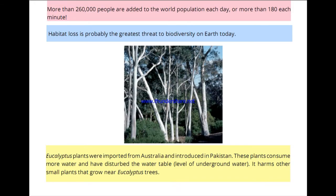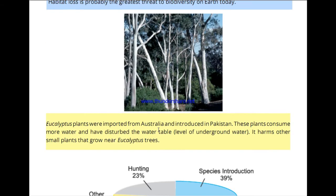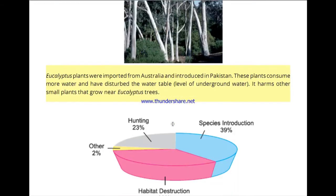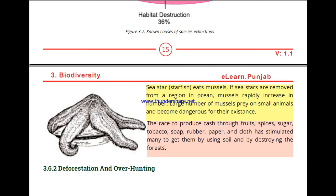An example of the introduction of a species is Apliptis, a water plant. This plant was not originally found in Pakistan. It came from Australia. When it was introduced into Pakistani waterways, it had major consequences because it thrived in the water conditions there.